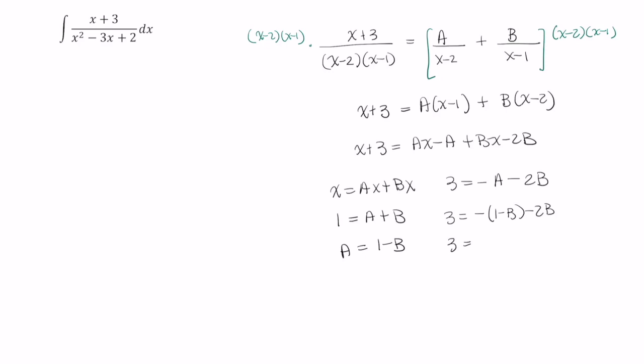So 3 is equal to negative 1 plus b minus 2b. Adding negative 1 to both sides and combining these like terms, I end up with 4 is equal to negative b. So b is equal to negative 4.